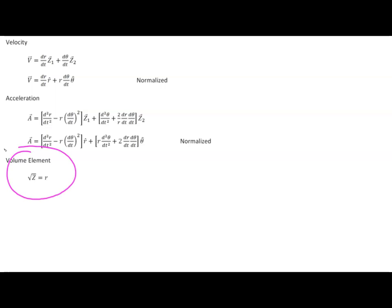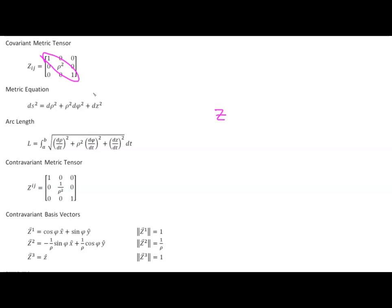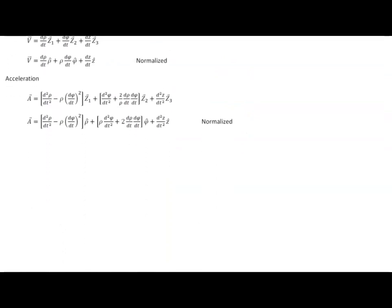Next would be cylindrical polar coordinates. Again, we have only diagonal elements, so the determinant value is the product of the three, which is equal to rho squared. And that means our volume element, the square root of z, is equal to rho. That's going to be our volume element for cylindrical polar coordinates — it's simply the value of rho.